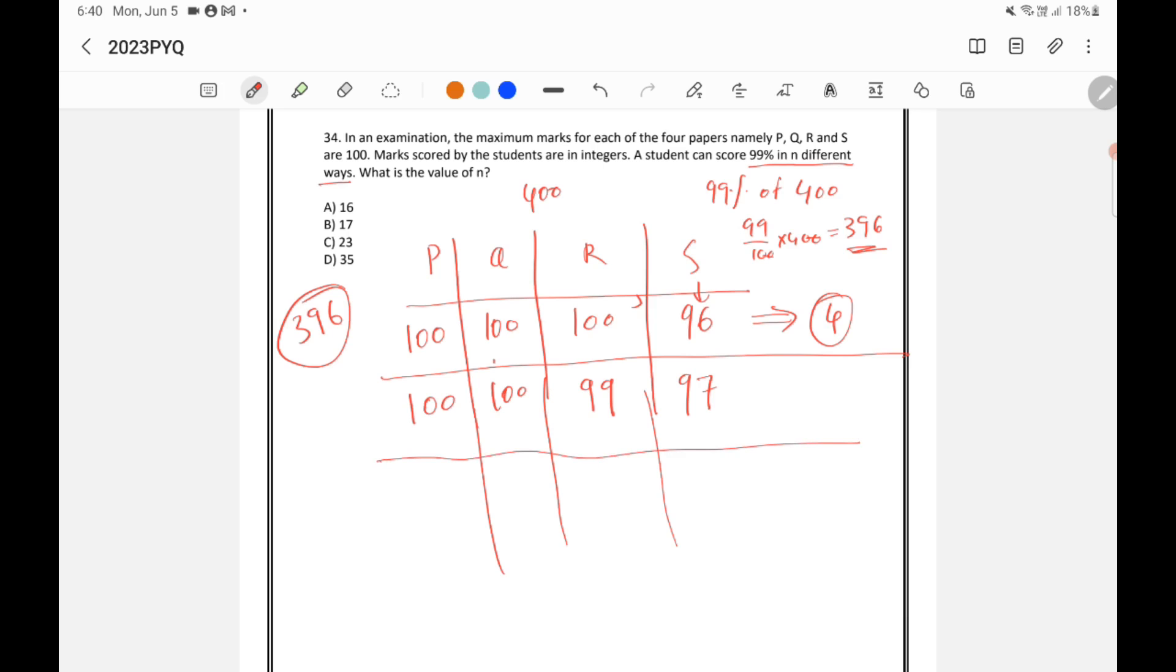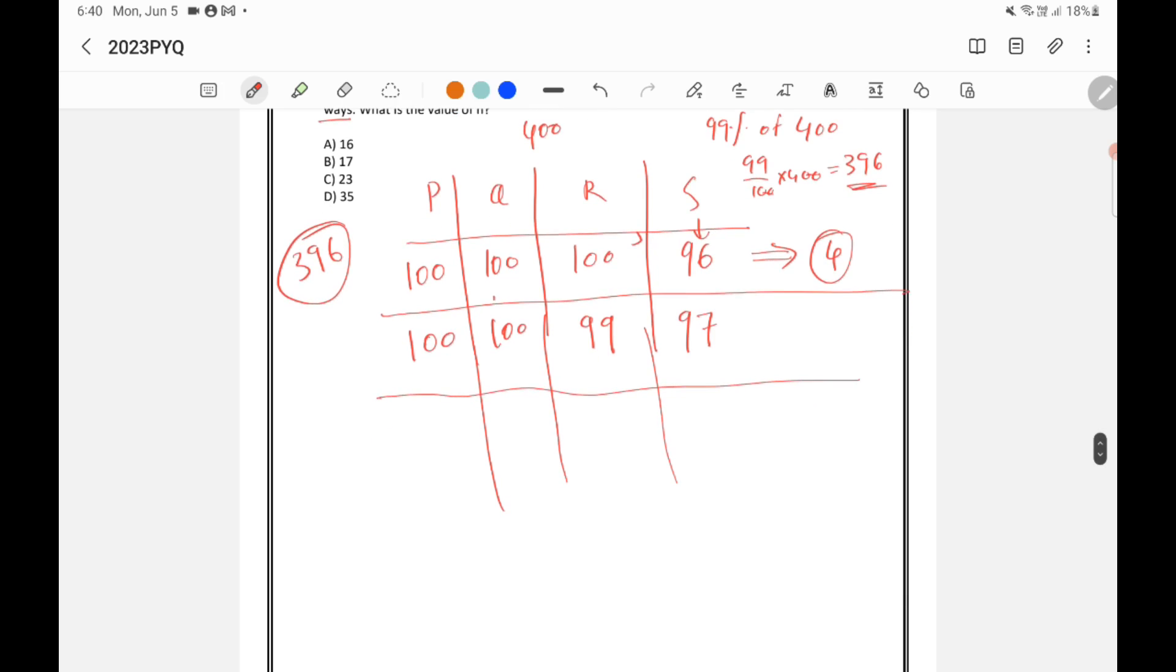So I will tell you an easier way in which you can take the possibilities. How many ways we can arrange 100, 100, 99, and 97 among 4 papers.